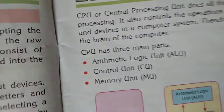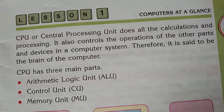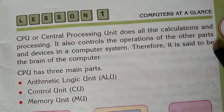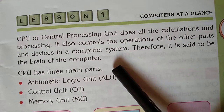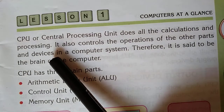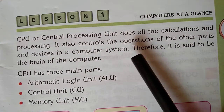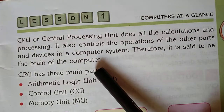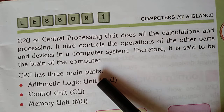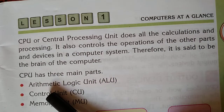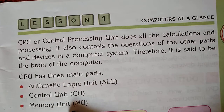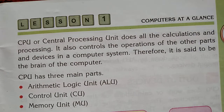Now come to the next page. CPU, or Central Processing Unit, does all the calculation and processing; it also controls the operations of the other parts and devices in a computer system. CPU has three main parts according to the functions they perform: Arithmetic Logic Unit (ALU), Control Unit (CU), and Memory Unit (MU).